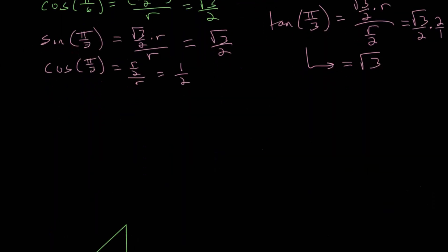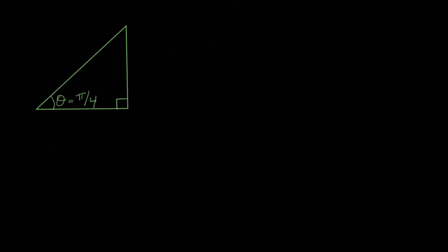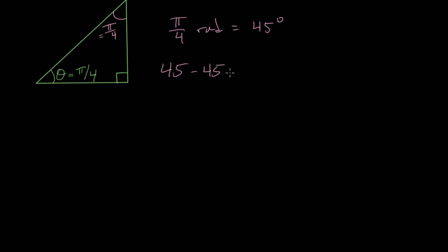If we look at the pi over 4 angle, we know that pi over 4 radians is simply 45 degrees. Then we can conclude that this angle up here is also pi over 4 radians, or 45 degrees, meaning that we have a 45-45-90 right triangle, another special right triangle.